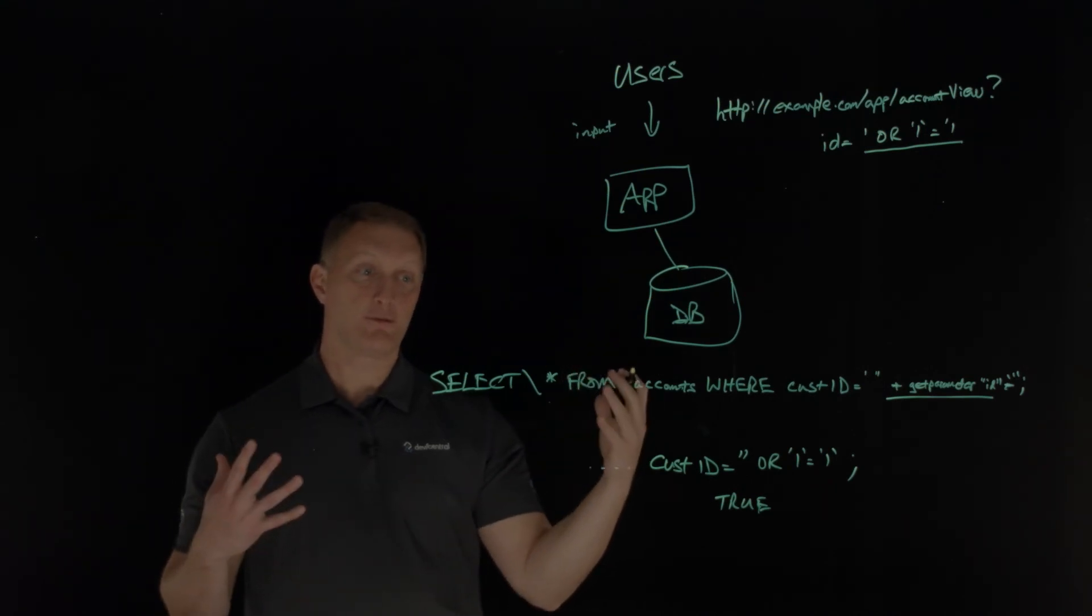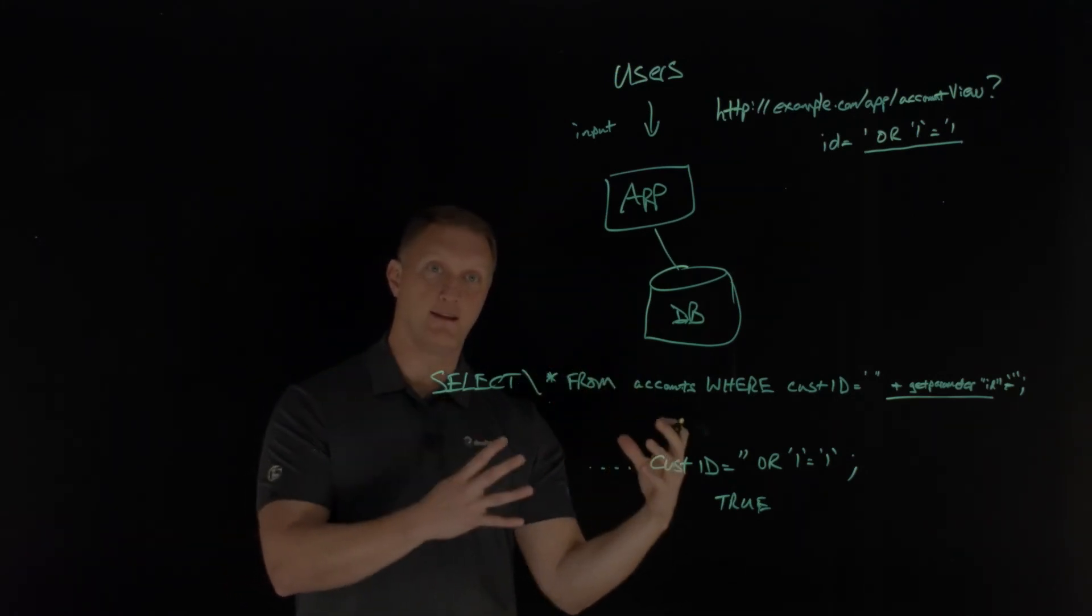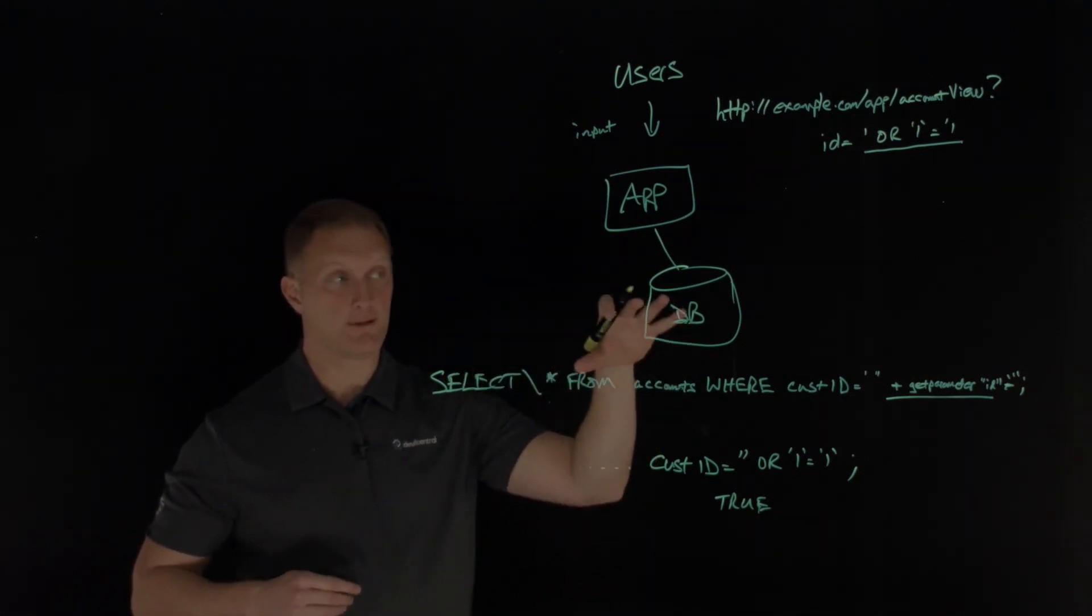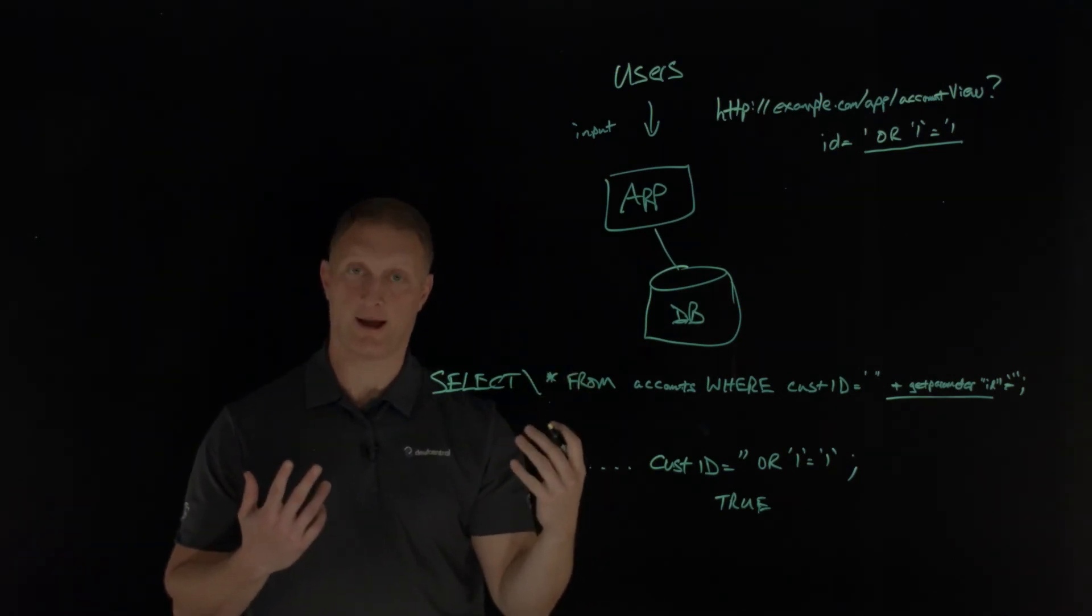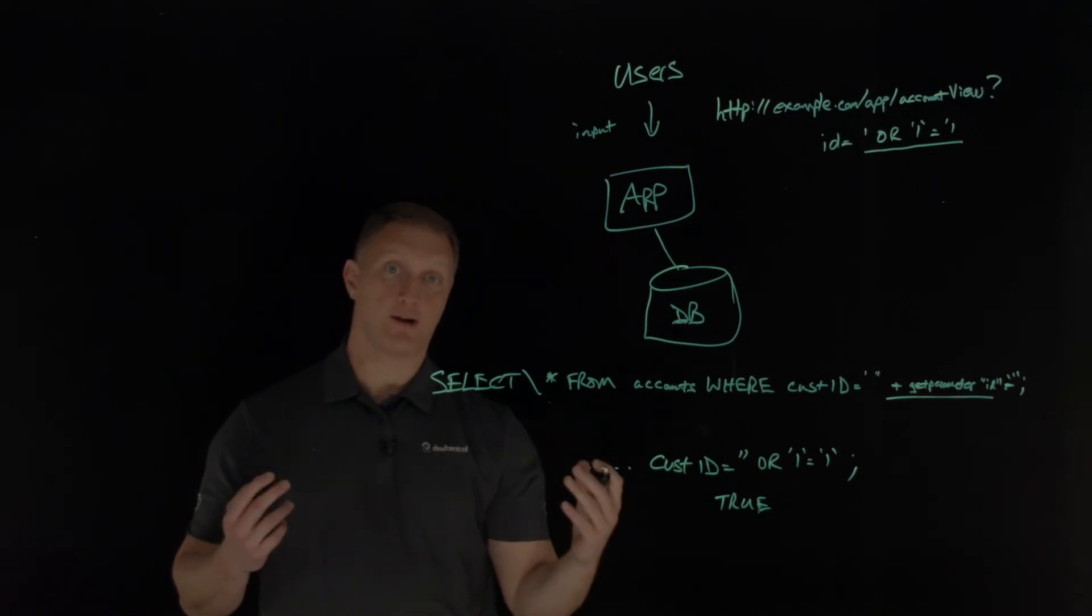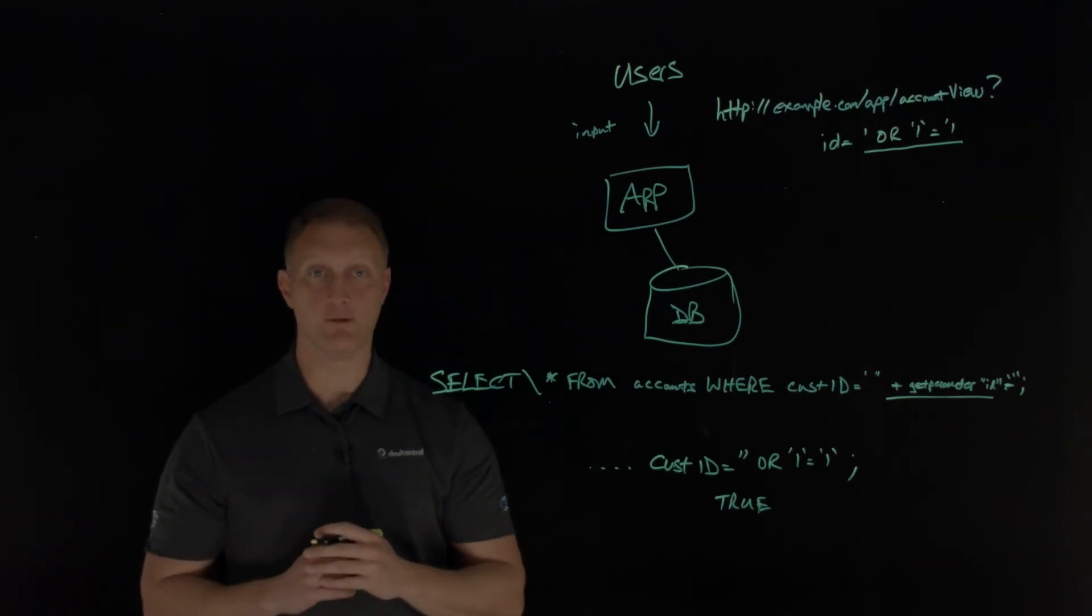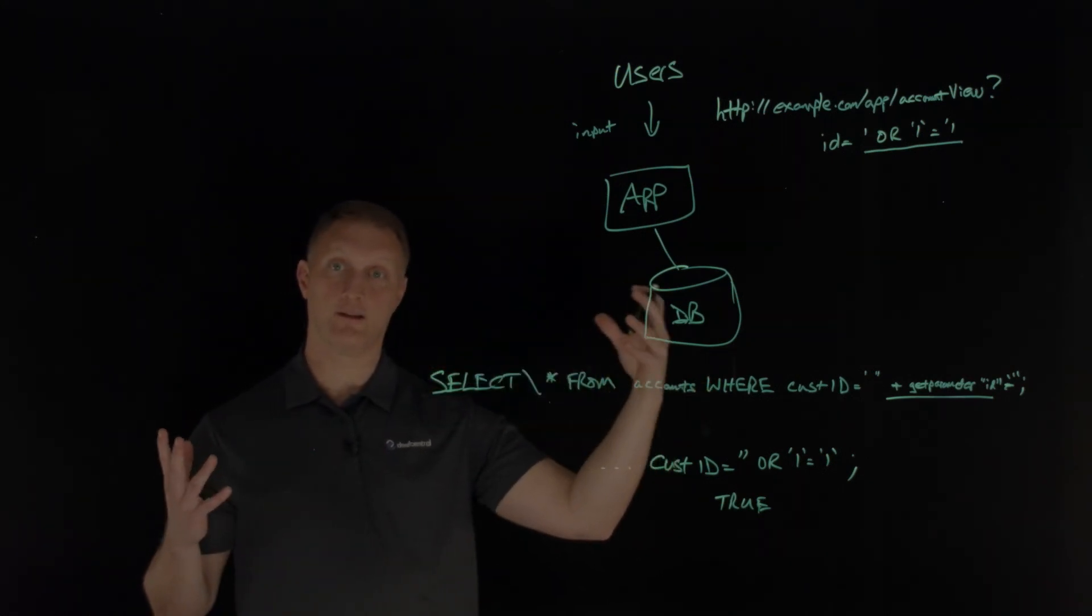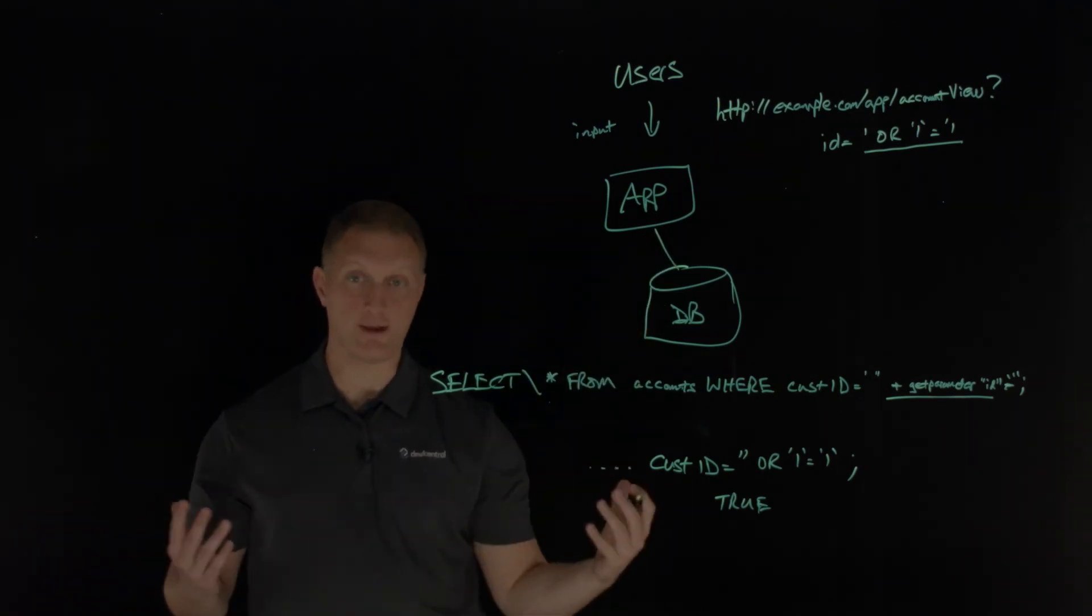So a few things really quick to wrap this up on preventing injection. It really requires keeping the data separate from the commands and the query. In the context of an API, which we didn't really talk about API specifically, but in the context of API you need to use a safe API, which avoids using the interpreter entirely if possible, or provides a parameterized interface if possible, or possibly migrate over to like an object relational mapping tool, like an ORM tool. Another thing you can do, not necessarily on API, but now just in general is use positive server side input validation. So we talked about input validation, also parameterize your queries whenever you can.